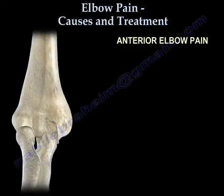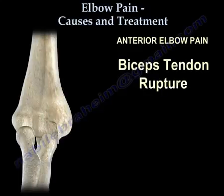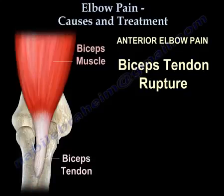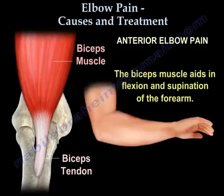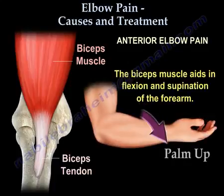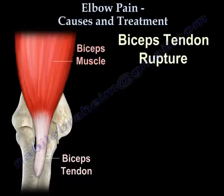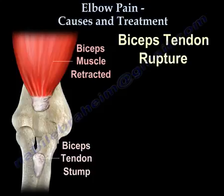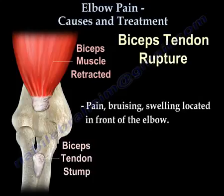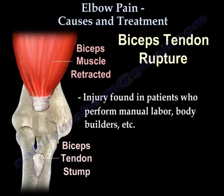Anterior elbow pain: biceps tendon rupture. The biceps muscle inserts into the radial tuberosity below the elbow. The biceps is an important muscle that helps in elbow flexion and supination of the forearm. When the biceps tendon ruptures distally, the muscle retracts upward, causing pain, bruising, and swelling located in front of the elbow. This injury is found in patients who perform manual labor and bodybuilders.